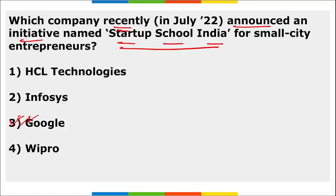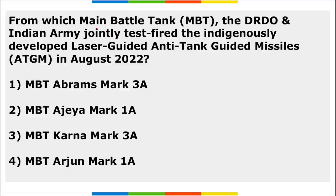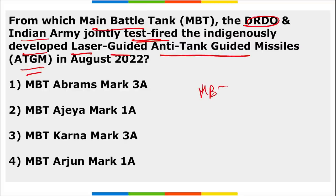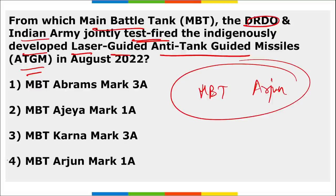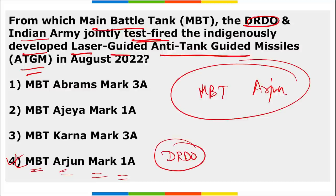From which main battle tank did DRDO and the Indian Army jointly test-fire the indigenously developed laser-guided anti-tank guided missile? It was the main battle tank named Arjun Mark 1A that was used by DRDO and the Indian Army to test the laser-guided anti-tank guided missile.